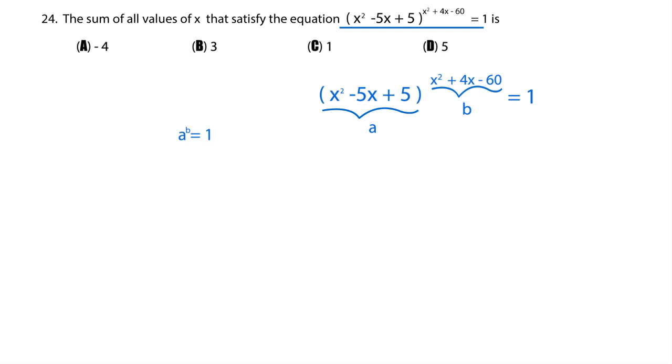And how do you get a result of 1 when you have a as the base and b as the exponent? Well, there's a few possibilities.